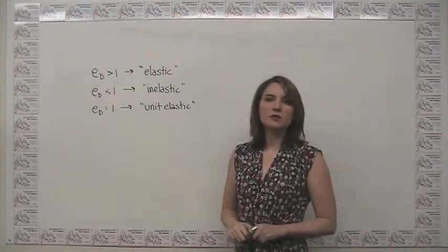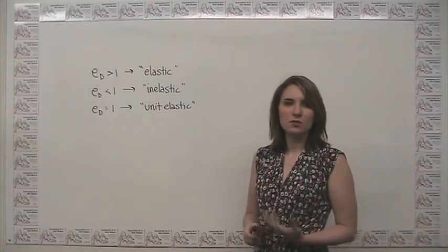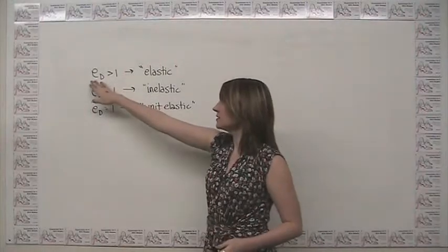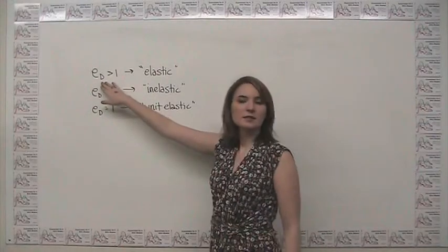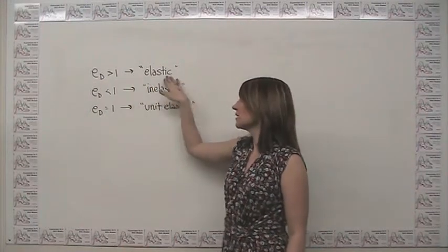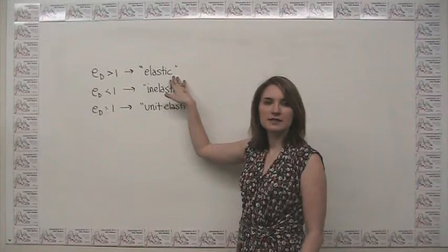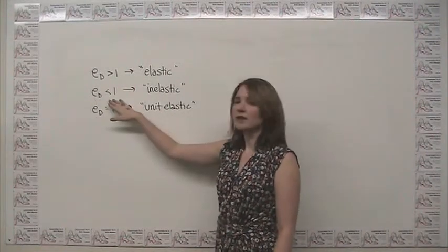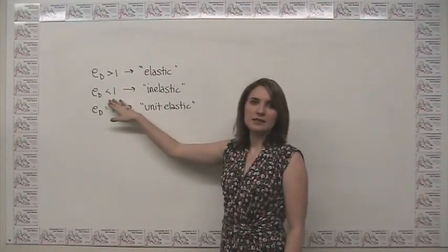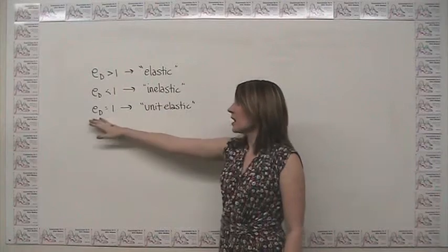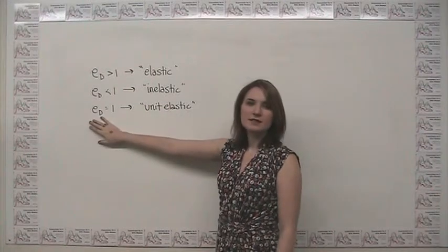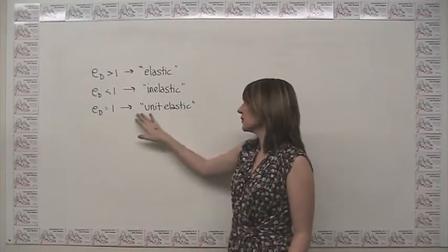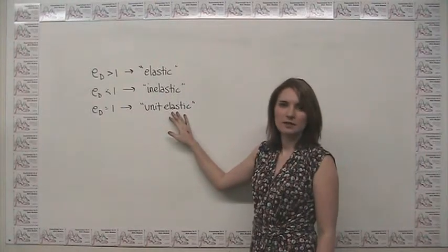In general, we group situations into one of three categories. If the elasticity of demand is greater than one, we say the situation is elastic. If it's less than one, it's inelastic. And if the elasticity of demand is exactly equal to one, we refer to that as unit elastic.